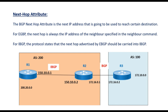Once R2 learns the 172.10.0.0 network, it advertises the same network to R1 through iBGP. When R1 learns the 172.10.0.0 network, its next hop will not be R2's local address but will remain 172.16.0.2, as per the next hop attribute — the next IP address used to reach the destination. So R1 will have next hop 172.16.0.2 to reach network 172.10.0.0. This is how the next hop attribute works.